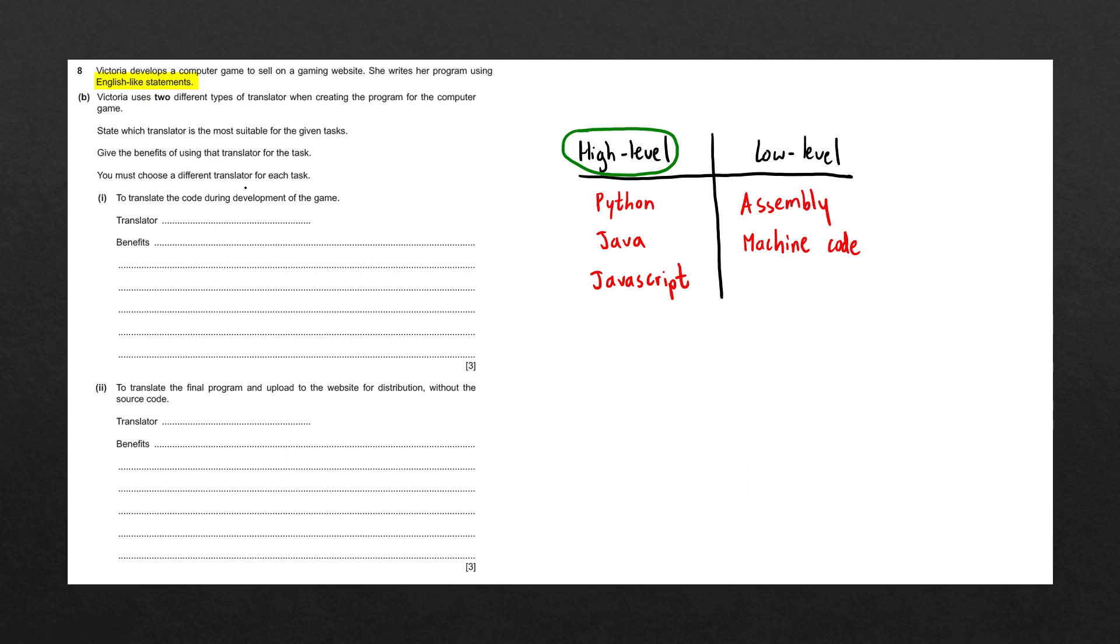We have two different types of translators: a compiler and an interpreter. In the question, they tell us that we must choose a different translator for each task. So one of these is going to be compiler, one of them is going to be interpreter. Let's work out which one is which.